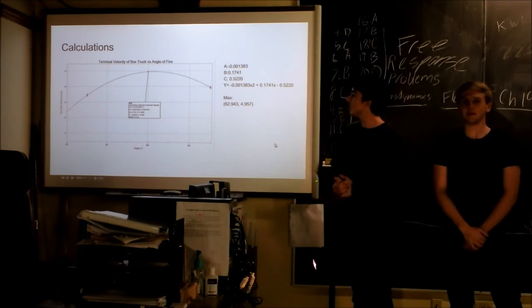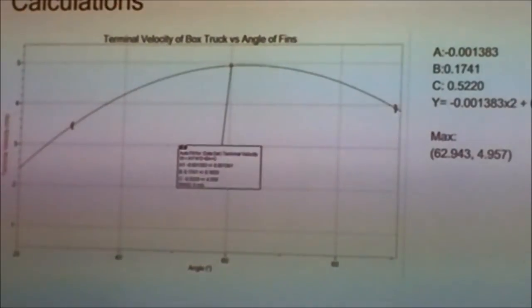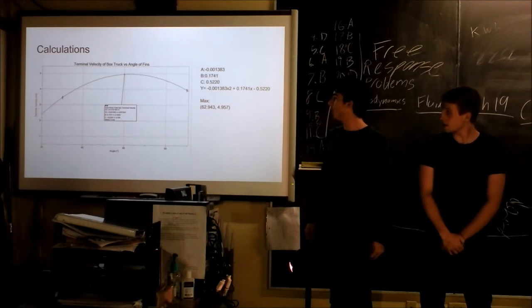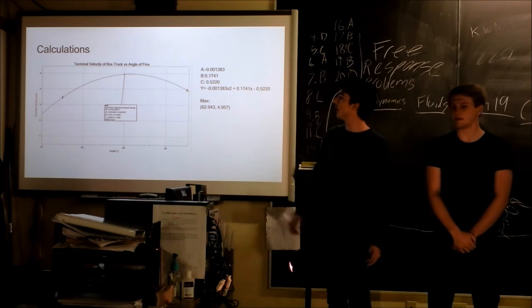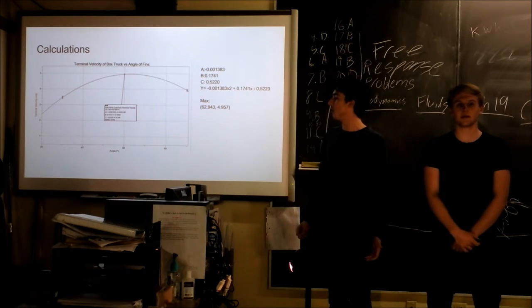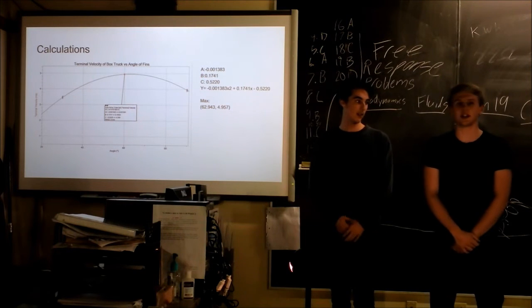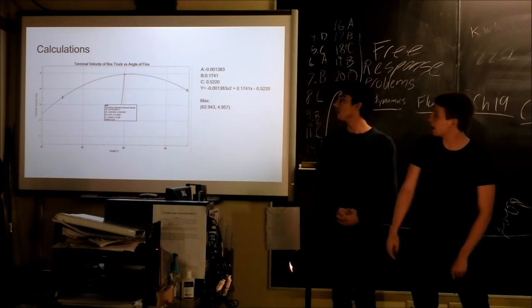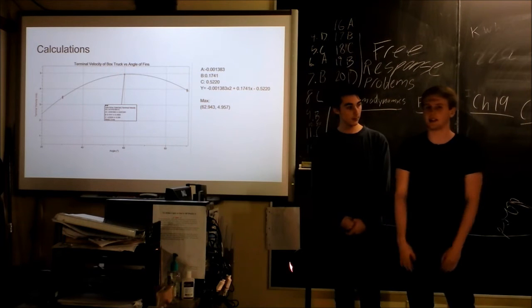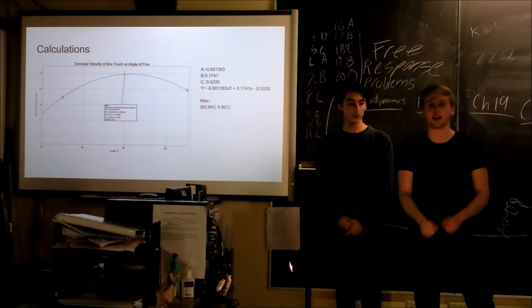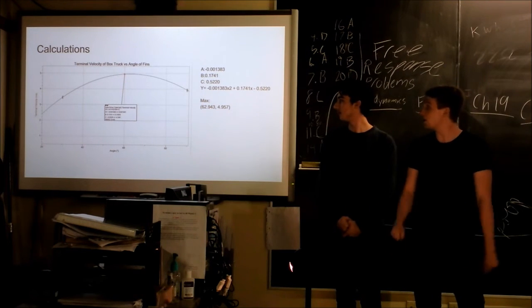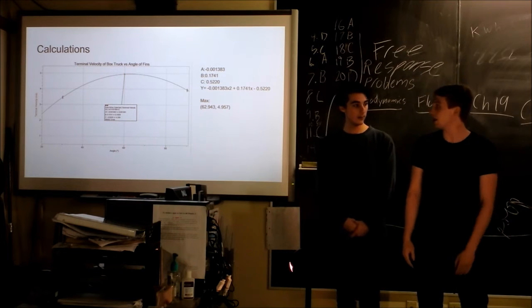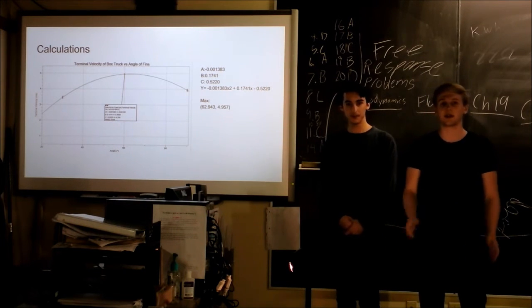We graphed the terminal velocity versus the angle, and clearly whenever you have three points, you can put it onto a quadratic curve, but we figured that it worked pretty well the way that our data was. When we did the curve, we could extrapolate from that what the most efficient angle would be or the angle that would give the highest terminal velocity. Logger Pro gives us the three values: A, B, and C for Y equals AX squared plus BX plus C. We graphed that function in our TI-84s, and it gave us a maximum of 62.943 degrees, which was our X, at a terminal velocity of 4.957 meters per second, which is about 5 and 63. We got pretty close with our guess to our data, so that was nice to see.